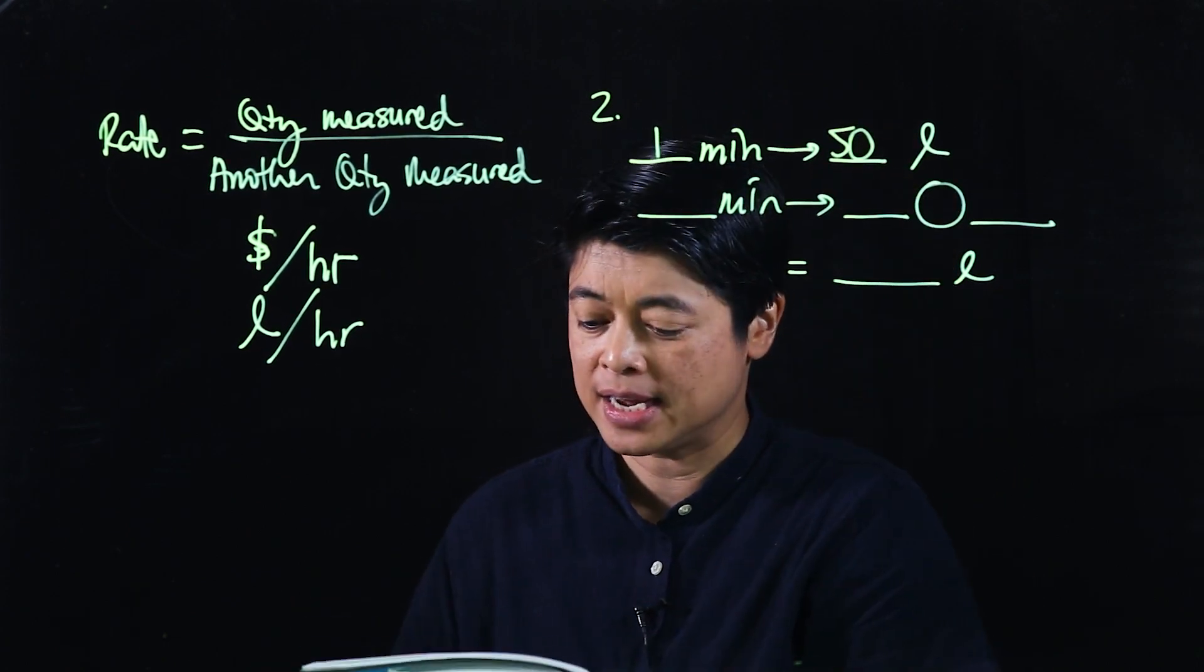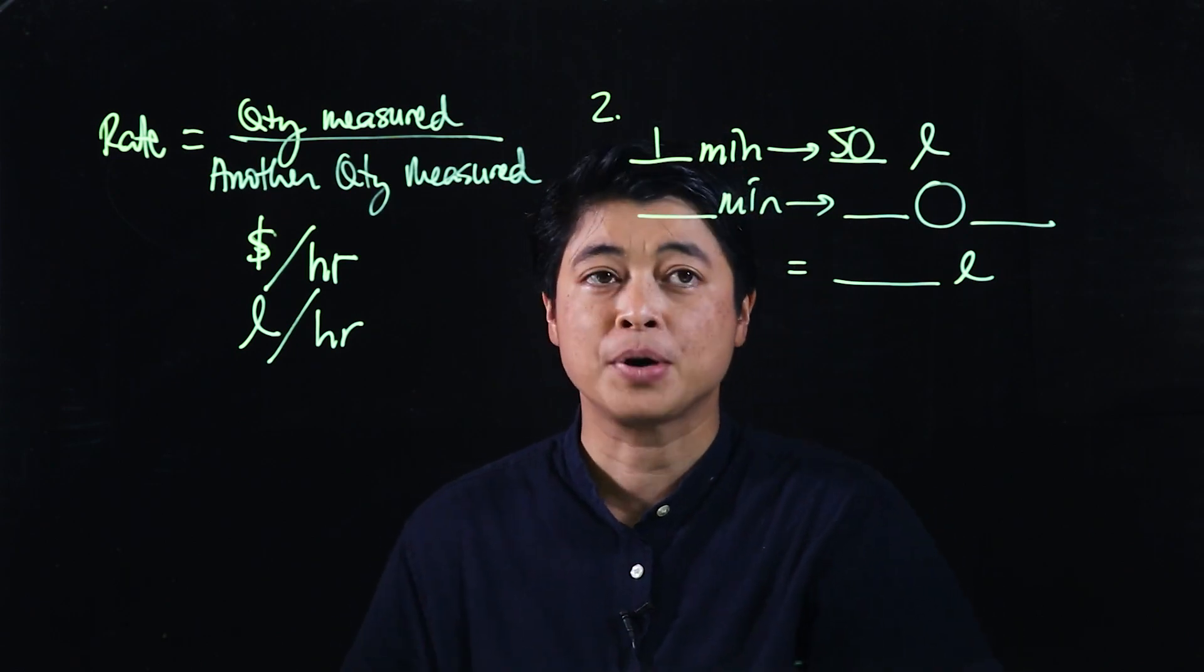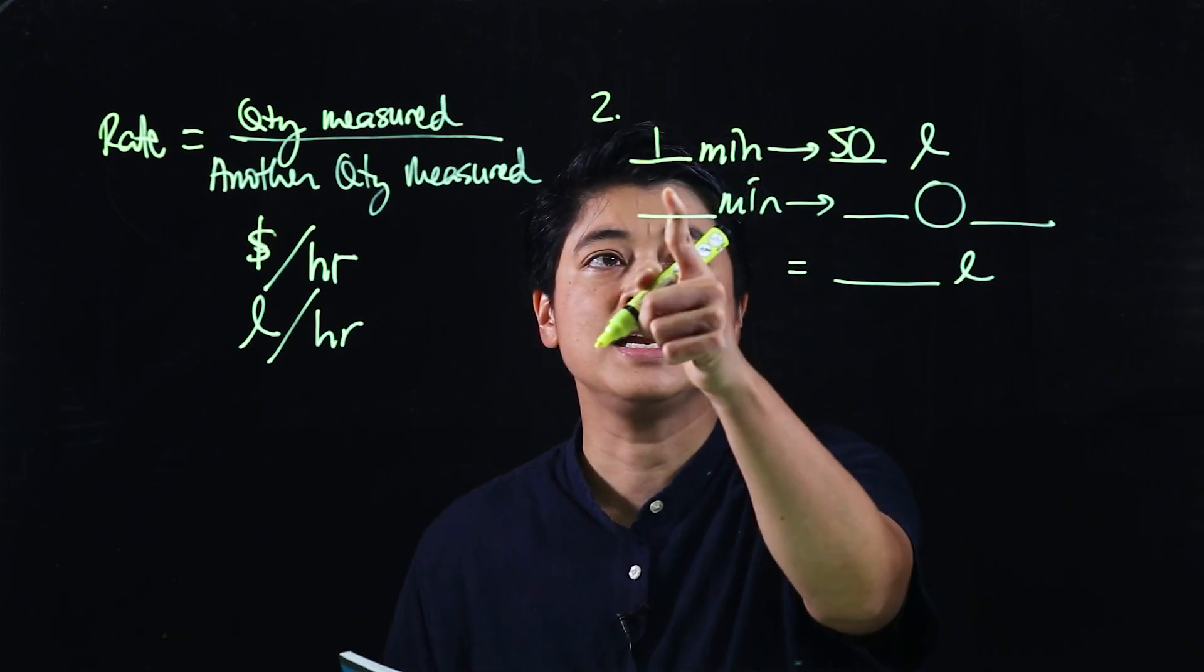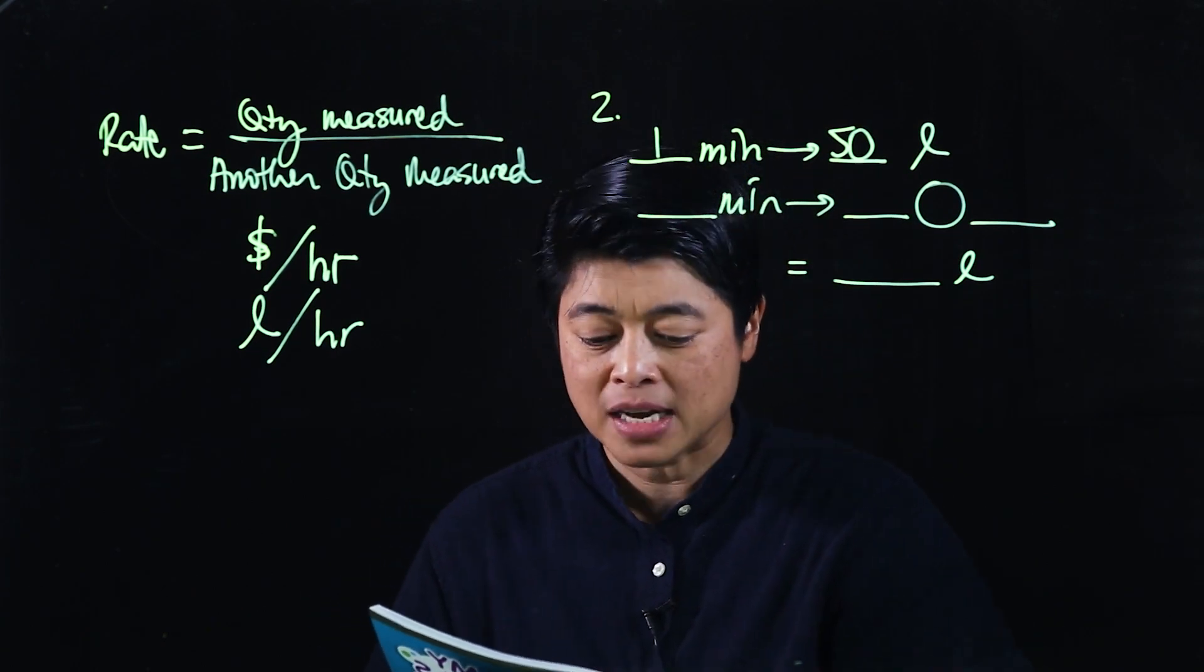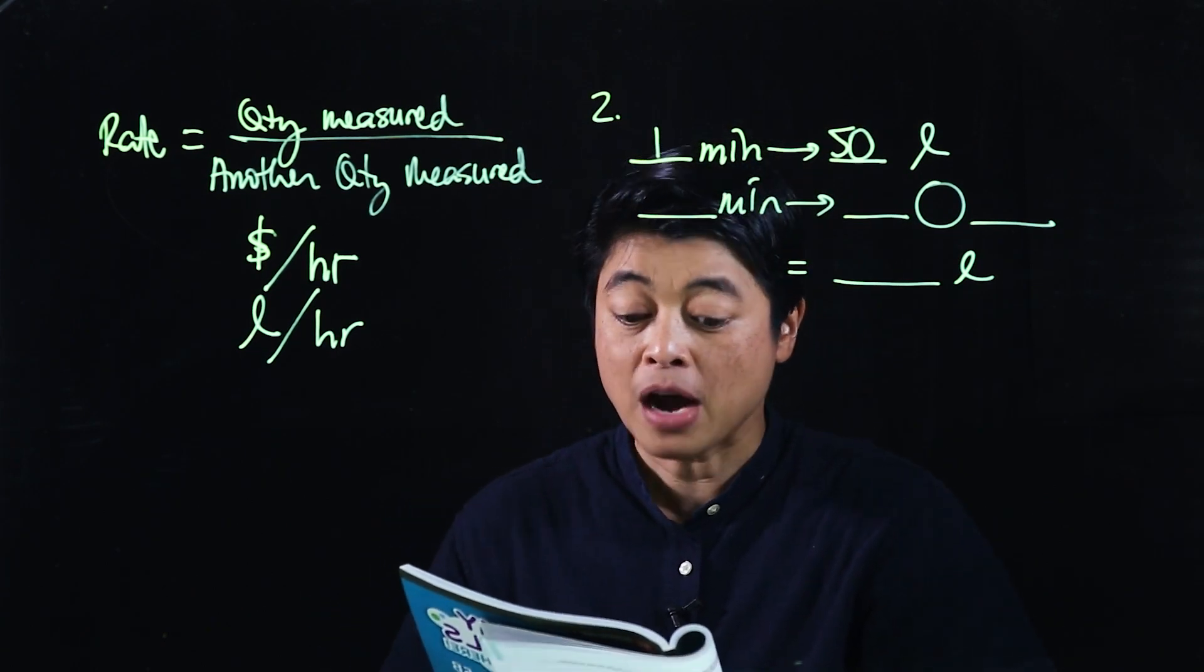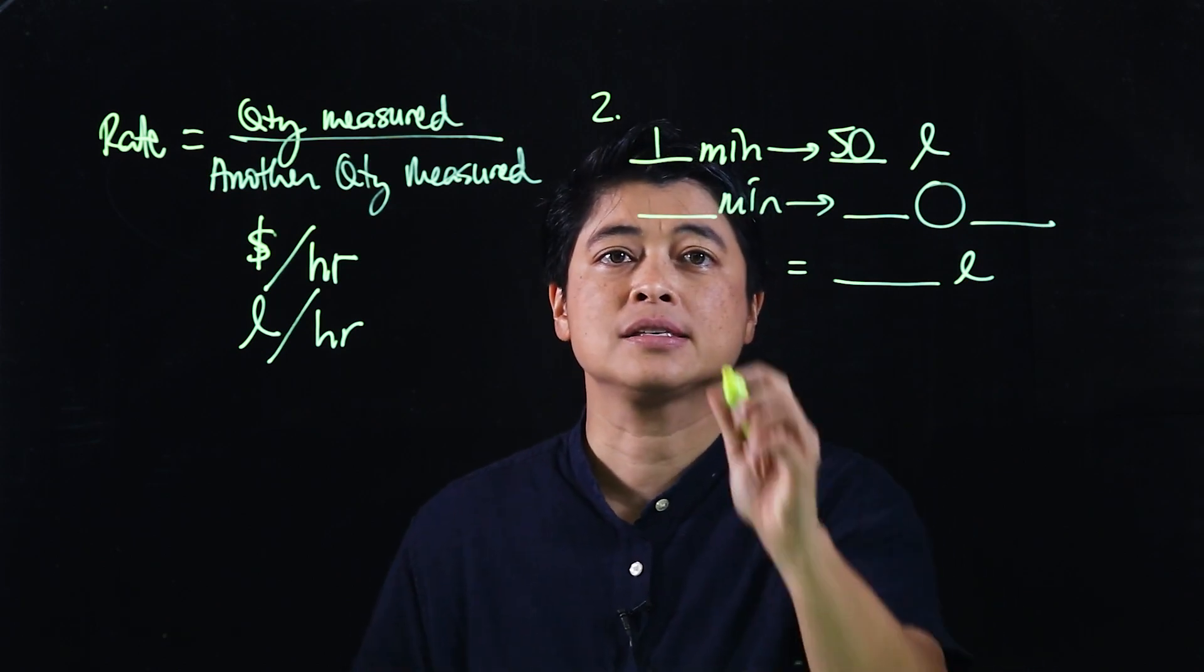So again, it says water flows from a tap at a rate of 50 liters per minute, so in one minute there's 50 liters.